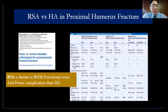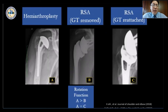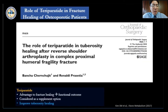The result is pretty good. It's proven that reverse gives much better overall results compared to hemiarthroplasty. Even if the tuberosity doesn't heal, the patient still has good function with reverse. But if the tuberosity heals, the patient will have excellent function because they also have good rotation. I have an article about teriparatide injection for reverse patients — it can improve the chance of tuberosity healing.